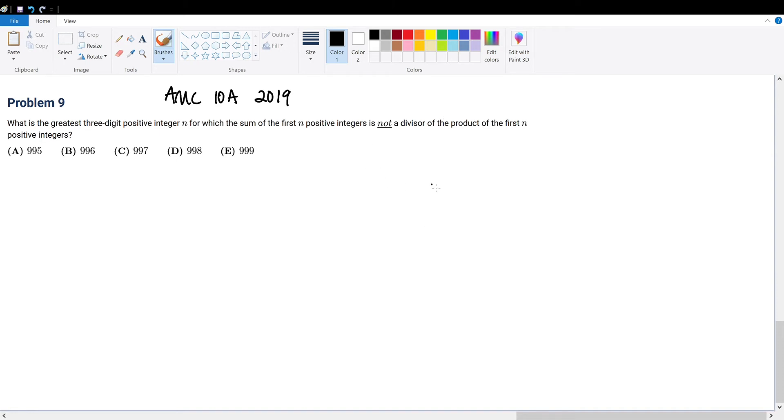Right off the bat, what is it trying to say? What is n? n is the largest three-digit positive integer for which the following criteria are true. What are the criteria?